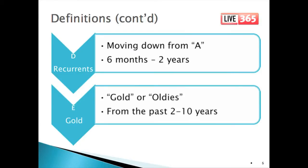Now let's look at our last two categories: the recurrence and the gold. The D or recurrent category consists of songs that have moved down from the A category. It's important to emphasize that not every song will go back to recurrent — only the songs that achieved A rotation, that is, only the songs that became the biggest hits, should go back into the recurrent category. Because this is a simplified model, we have only one recurrent category. In reality, many radio stations have two or possibly more recurrent categories. That's also true for the gold categories — we have one, the E category, but most radio stations will have two or more gold categories.